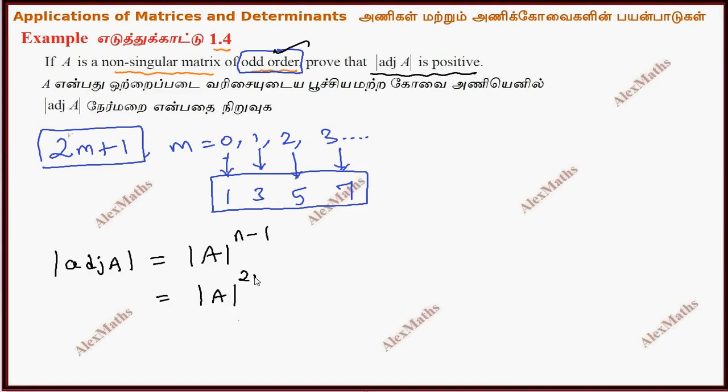So the determinant of A to the power 2m plus 1 minus 1, which simplifies to A to the power 2m. This can be rewritten as the determinant of A to the power m, whole squared.